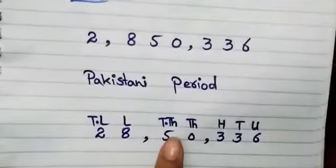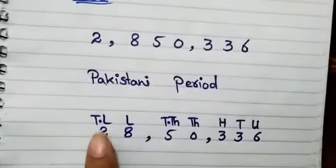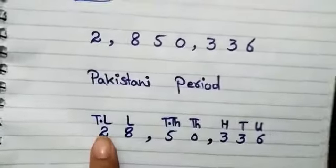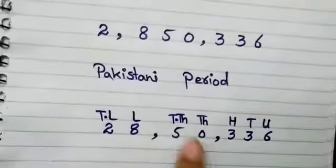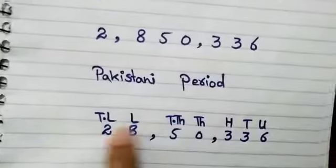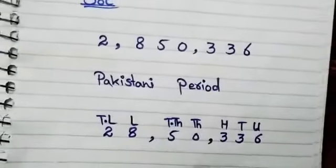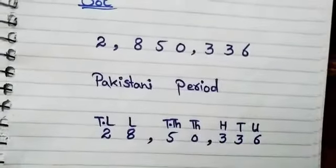Unit period, thousand periods, and lakh period. Groups of 2 in Pakistani periods and place values.